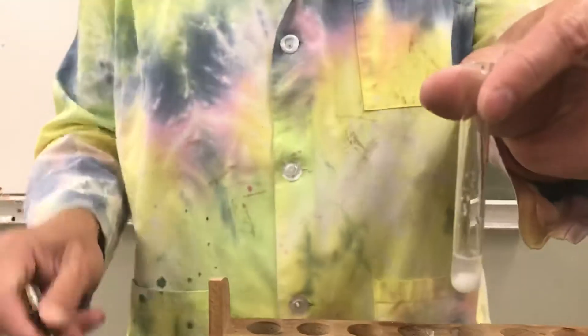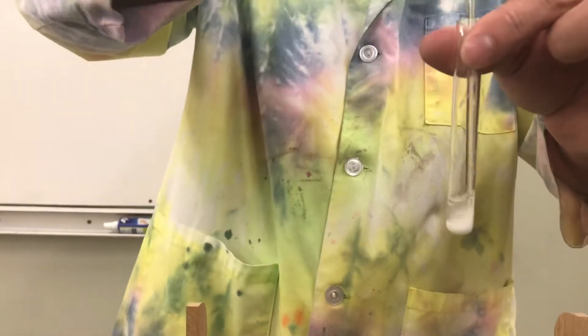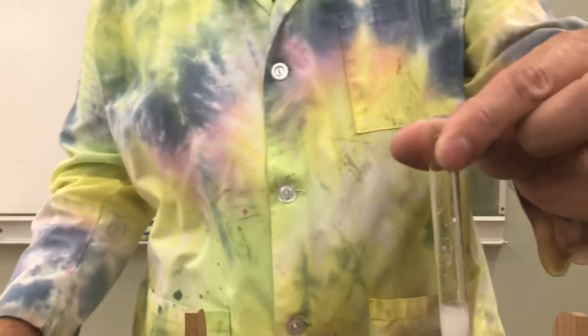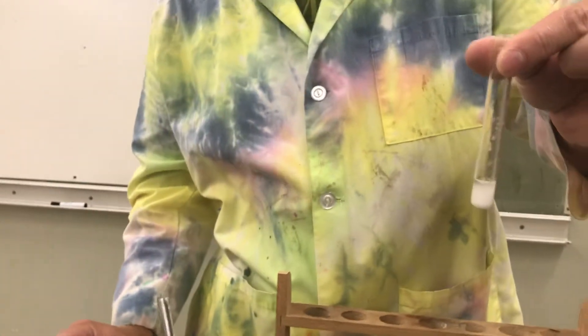And we're going to observe what sort of things we can see. I'm going to take a little stirring rod and mix this around. And you see it gets white and cloudy. And then we just let it settle for a while.